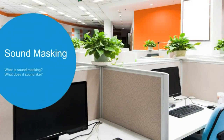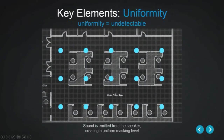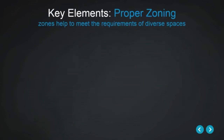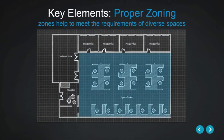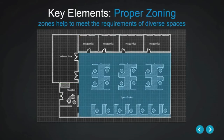Objective 4: Sound Masking. There are four key elements to all electronic sound masking systems. The first is uniformity. The second key element is proper zoning. In order to create the uniformity discussed previously, sound masking systems must be flexible enough to accommodate complex architectural spaces.